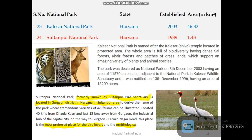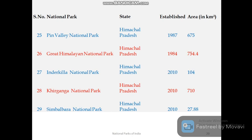Haryana has two national parks: Kalesar National Park and Sultanpur National Park. Kalesar has a Shiva temple, which inspired its name, and is known as a biodiversity hotspot where flora and fauna is preserved. Sultanpur National Park, formerly known as Sultanpur Bird Sanctuary, is now the most preferred destination for bird lovers and ornithologists.